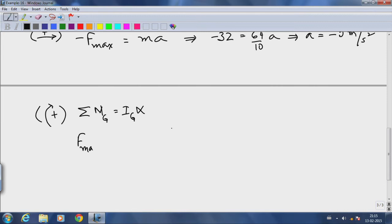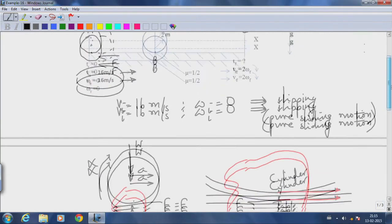So F_max times the radius equals m r squared over 2 times alpha. F_max is 32 times the radius, we are told is 2 meters.